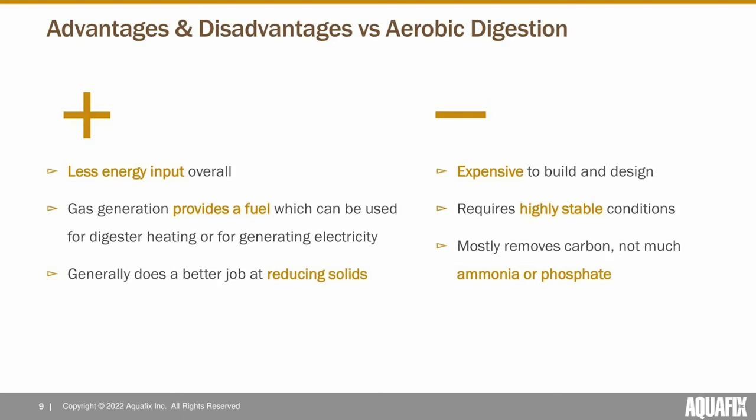In some larger plants, like the Madison Wastewater plant, they generate a large portion of their plant's electricity through anaerobic digestion most of the time. It's not a perfectly stable power source, but they are able to leverage anaerobic digestion to save energy rather than cost energy on site. Anaerobic digestion also tends to do a better job at reducing solids than aerobic digestion.